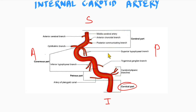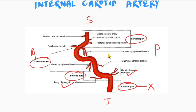The cervical part has no branch. The petrous part has two branches: the caroticotympanic branch and the artery of the pterygoid canal. Inside the cavernous sinus, the cavernous part has three branches: the superior hypophyseal branch, the artery to the trigeminal ganglion, and the inferior hypophyseal branch.